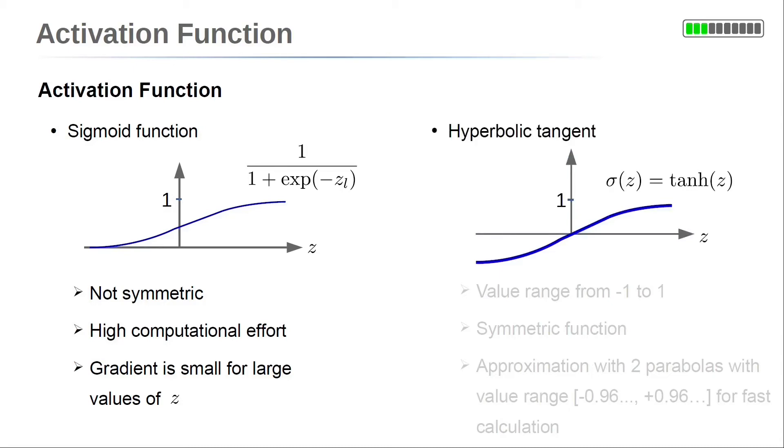A hyperbolic tangent can be used as activation function as well. This function is limited between minus 1 and plus 1. In contrast to the sigmoid function, the hyperbolic tangent has a point symmetry with respect to zero. Similar to the sigmoid function, the hyperbolic tangent function is computational expensive. This is because it is defined by exponential functions as well.